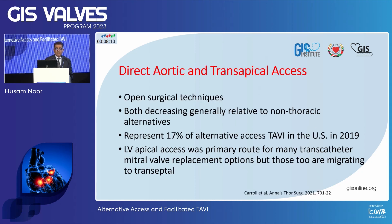Direct aortic and transapical access are open surgical techniques, both decreasing generally relative to non-thoracic approaches. They represented about 17% in the U.S. in 2019. LV apical access was primarily the route for many transcatheter mitral procedures, but even now this is migrating to transseptal.